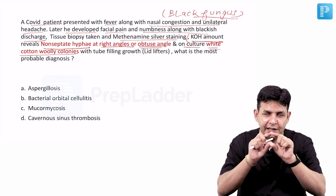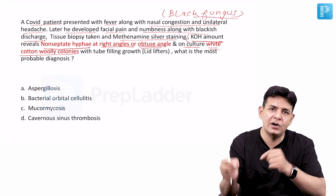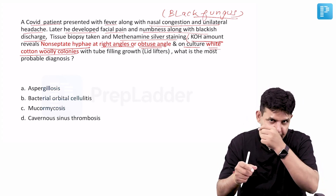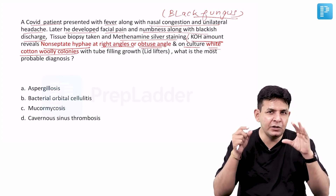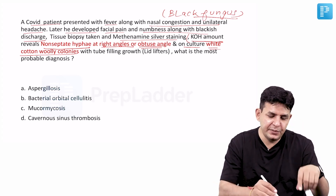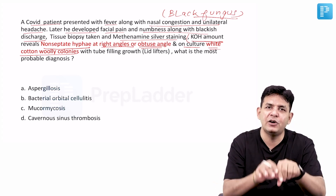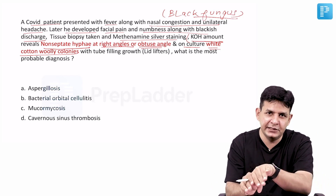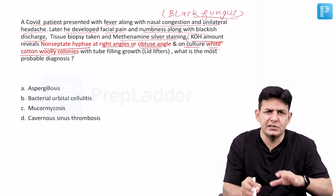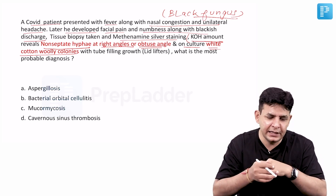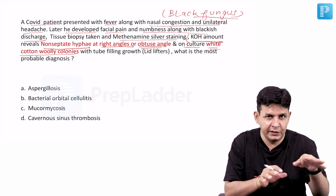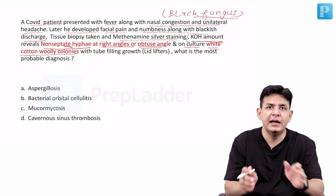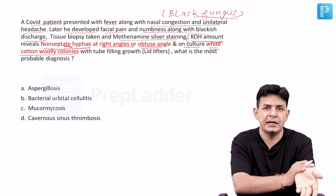They are ribbon-like, at right angles or obtuse angles, with aseptate hyphae. If the examiner wants to confuse you, they will change this to septate hyphae with dichotomous branching, along with some color change. In that case, with a COVID patient history and those features, the answer changes to Aspergillus.